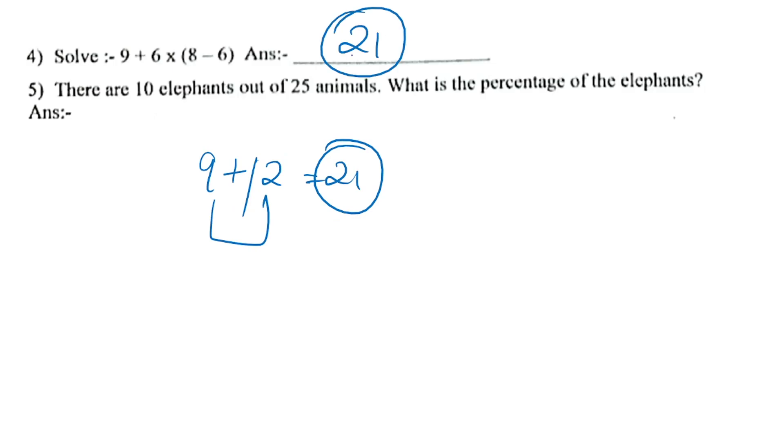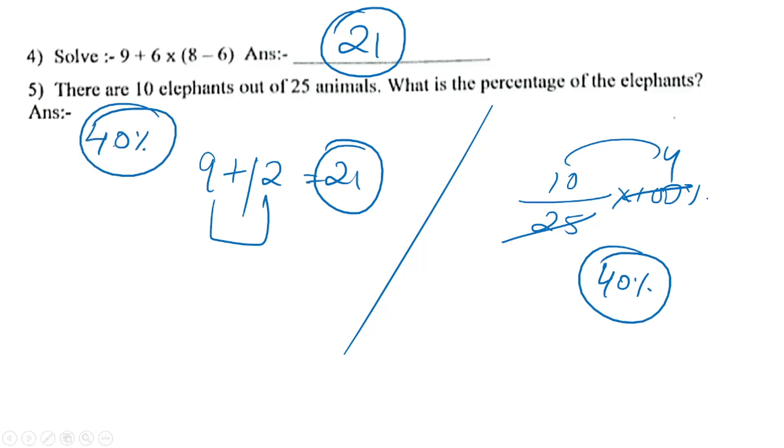There are 10 elephants out of 25 animals. What is the percentage of the elephants? 10 out of 25 times 100 percent. 25 fours are 100, and 10 fours are 40 percent. So the answer is 40 percent.